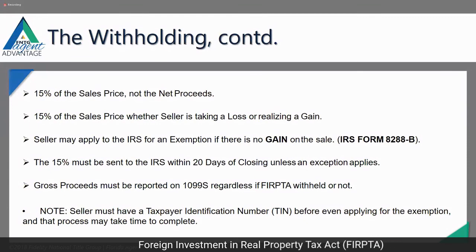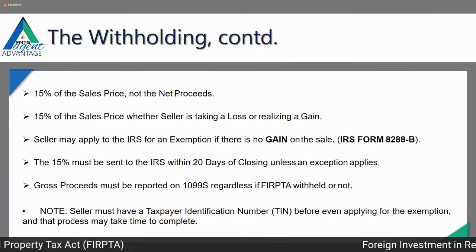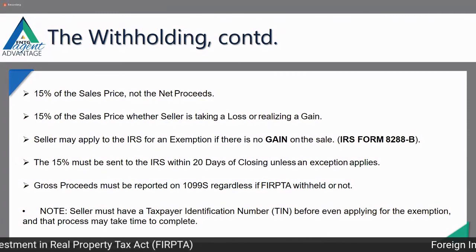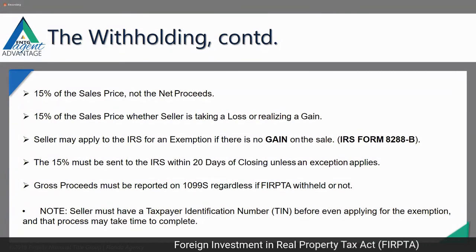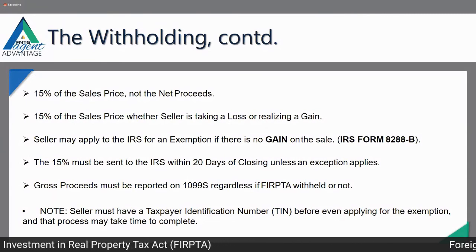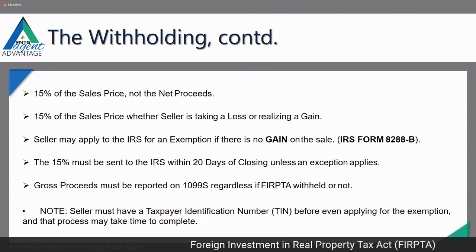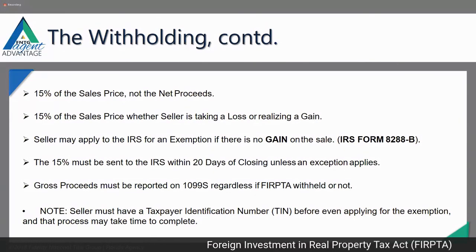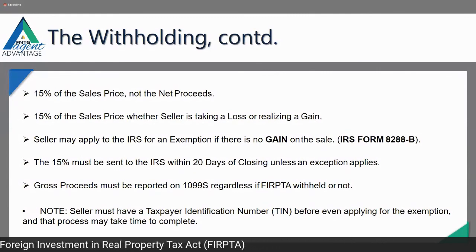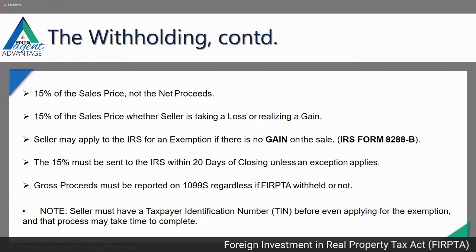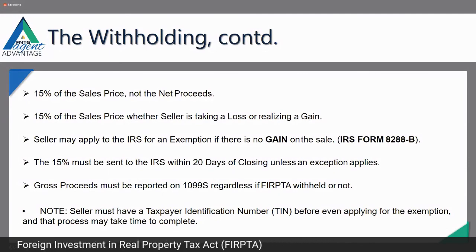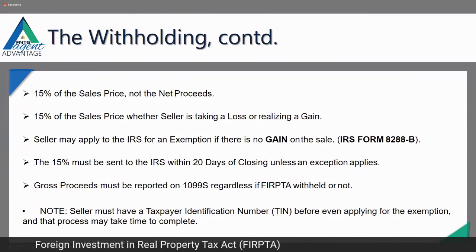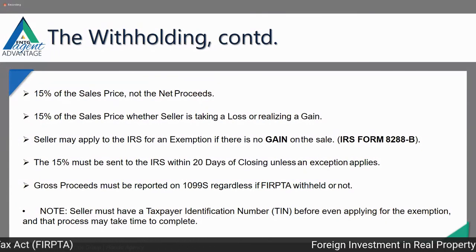Form 8288-B can be pulled off the IRS website, and some foreign nationals have done this many times and do it themselves. But for the most part, they really need to talk to a tax professional. I've seen realtors fill out the form for their sellers — please do not ever do that. Work with a CPA or someone who knows who to talk to at the IRS. To reduce that withholding from 15%, the application must be in the IRS's hands within 20 days of closing.